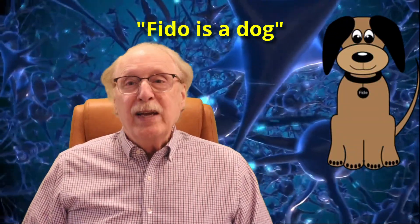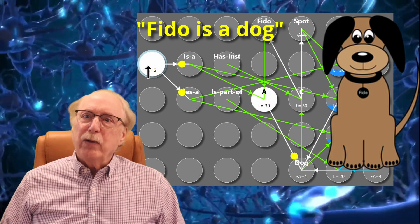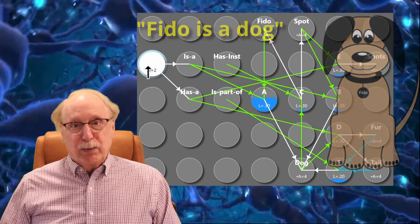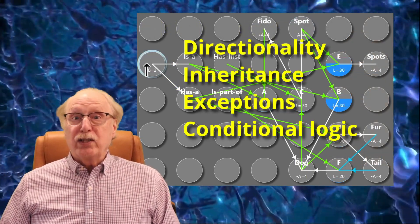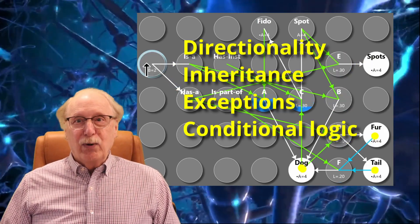What does it take for your brain to understand even the simplest concepts like Fido is a dog? In the last video we built a simple yet powerful neural model that could represent such knowledge, but real intelligence demands much more. Our brains can handle directionality, inheritance, exceptions, and even conditional logic, all without symbolic programming.